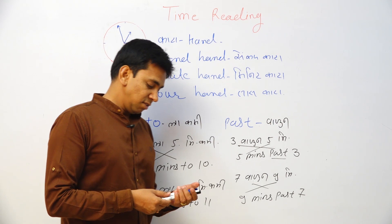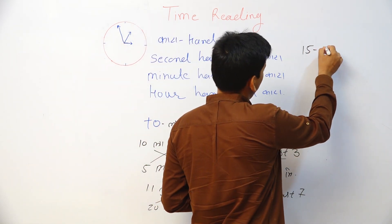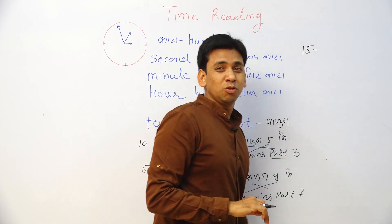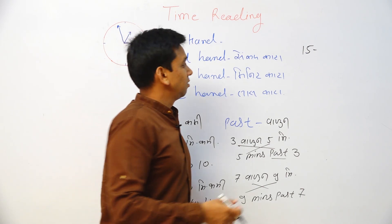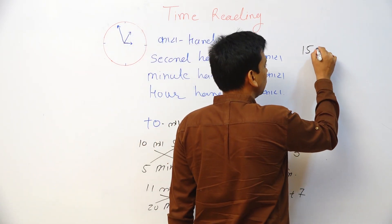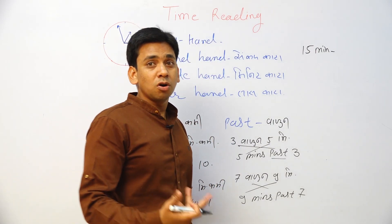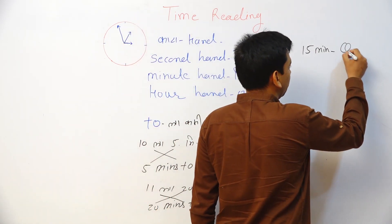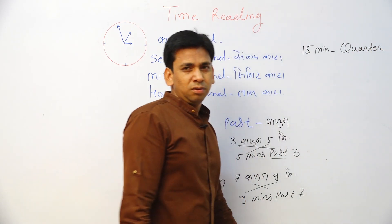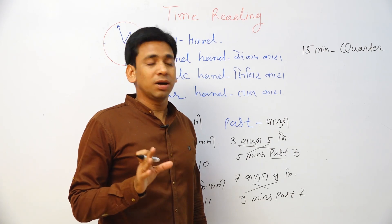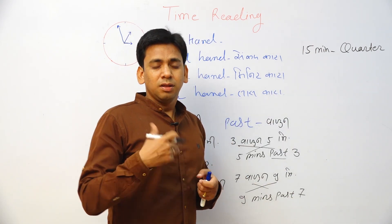Now again there is one concept. 15 minutes. Here we call it as a quarter. Quarter past 12, quarter to 1, quarter to 3, quarter to 7, quarter to 10. This is called quarter. Fifteen minutes, we call it as a quarter. Instead of fifteen minutes, we have to call it as a quarter. Quarter means what? One-fourth of something. That is called quarter.